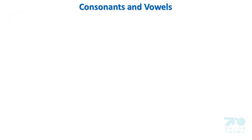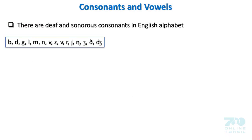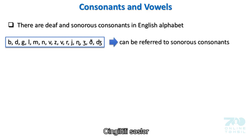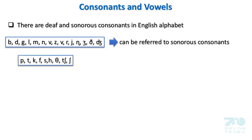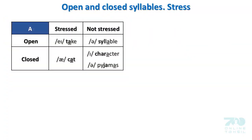There are deaf (voiceless) and sonorous (voiced) consonant sounds in English. Sonorous consonants include: B, D, G, L, M, N, V, Z, R, Y, NG, ZH, J. Deaf consonants include: P, T, K, F, SH, H, CH.